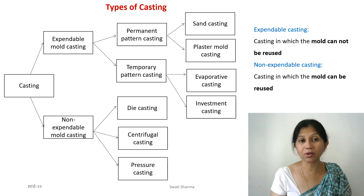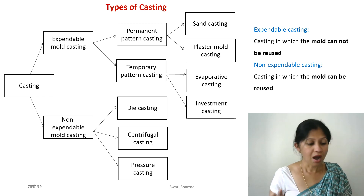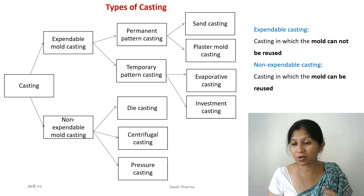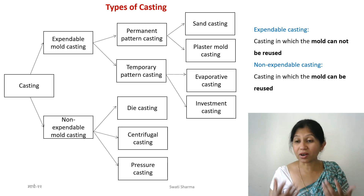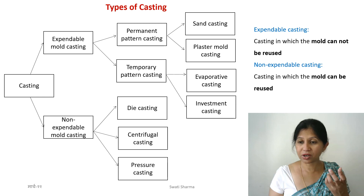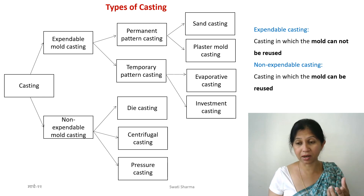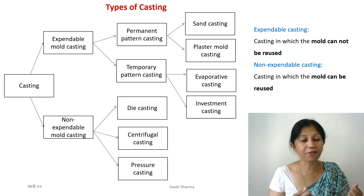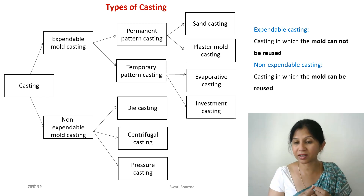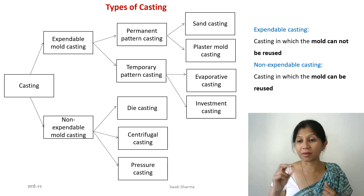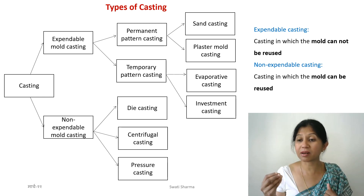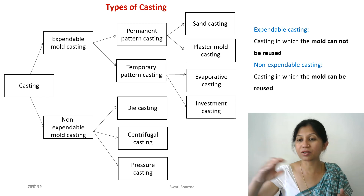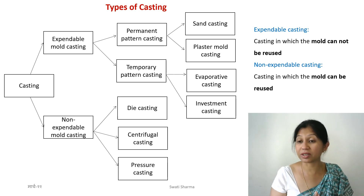Expendable molds are not reusable. For non-expendable (reusable) molds, you need to make sure the solidified metal does not stick to the mold. Often in these casting processes, you apply oil, specific lubricant materials, powders, or abrasive refractory materials so the mold does not stick to the surface of the part.